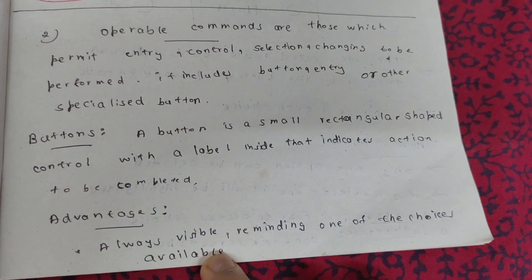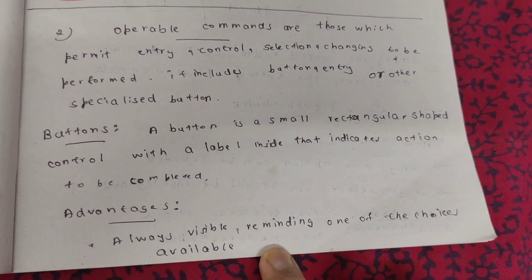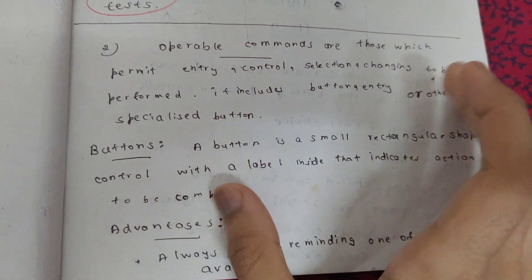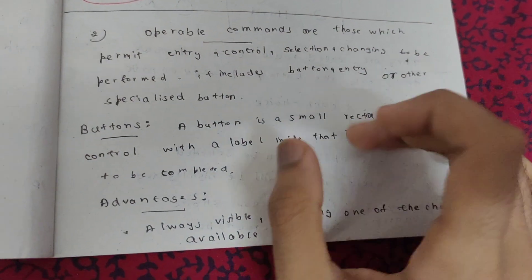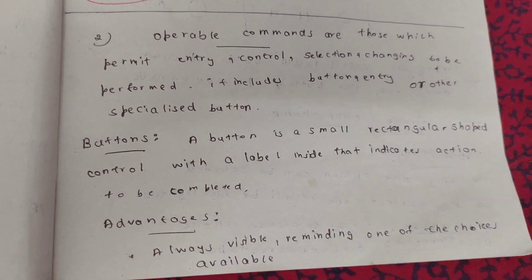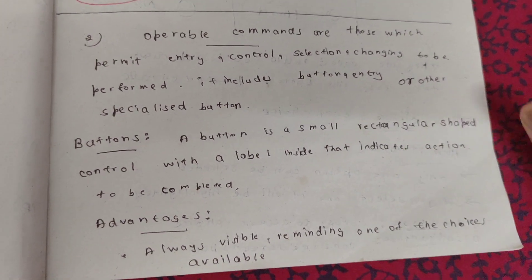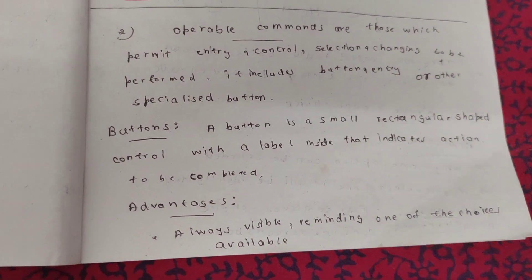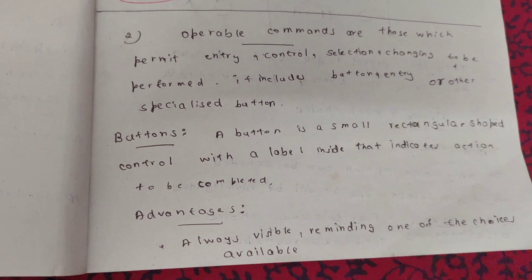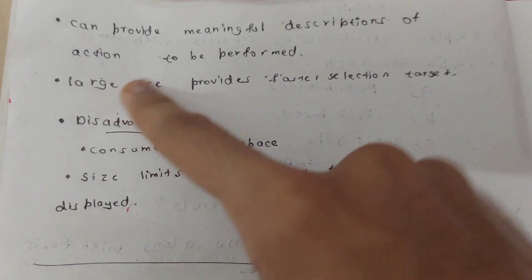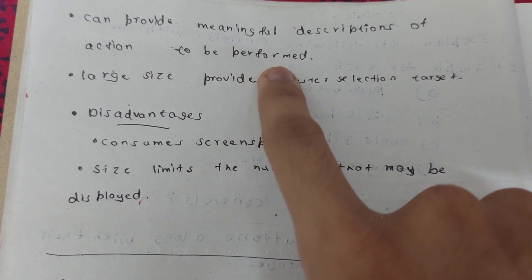The button has advantages. The first advantage is that it is always visible, reminding the user of the choices available. For example, when you open the computer and have a word pad open, there is a close button visible. If you click that close button, the window will close. So buttons are always visible on screen.